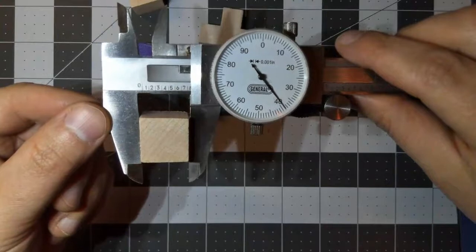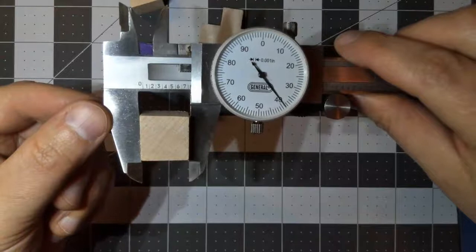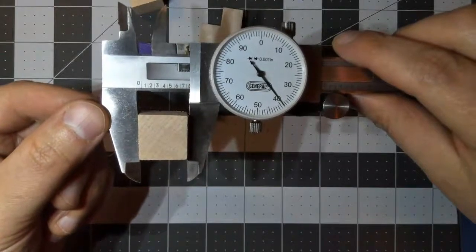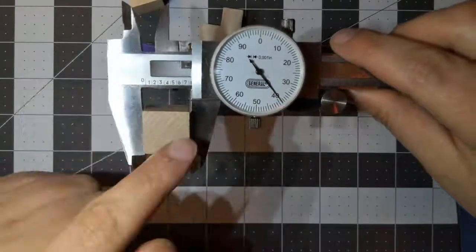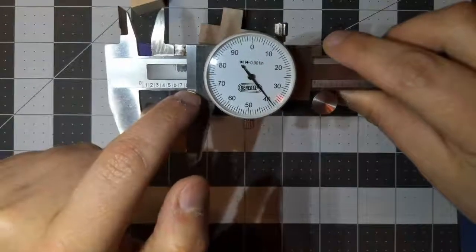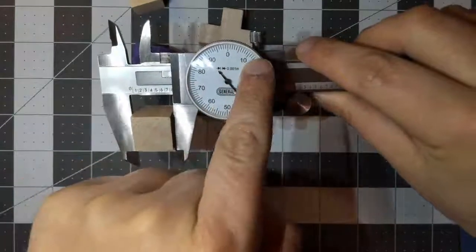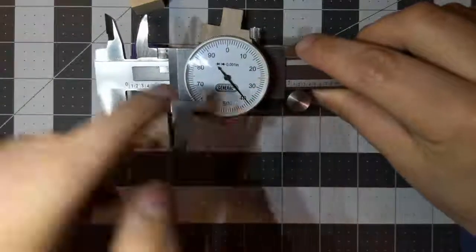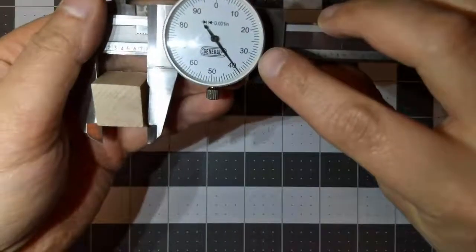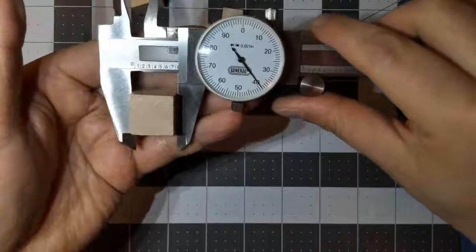So what is that reading? If you said 0.739, you are correct, because we're past the seven, we're not past the eight, so it's going to be 0.7. And then since it's past the ten, we would just count these numbers here. It's at the 39 mark, so it's 0.739.